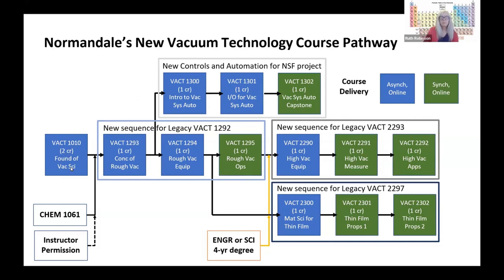With the exception of the 1010 course, these other courses are expected to be offered in about five-week segments so that you can do a series of three in one semester if you choose to. The flexibility of having them in these one-credit boxes means that you have a lot more flexibility in how you approach that. If you're unsure of which path or which courses would best serve your goals, you can contact any VacTech instructor or the program liaison for more information and guidance.